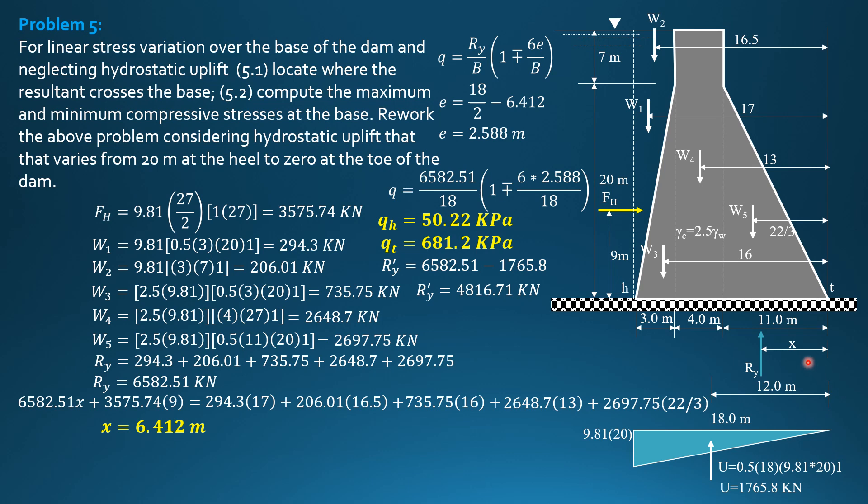Then again, to solve for X prime, let's call it X prime, it will change, it will approach the toe because of uplift, will be moved towards the toe. So 4816.71 times X prime plus FH 3575.74 times 9 plus uplift 1765.8 times 12. Then equals, the rest is the same, 294.3 times 17 plus 206.01 times 16.5 plus 735.75 times 16 plus 2648.7 times 13 plus 2697.75 times 22 over 3.